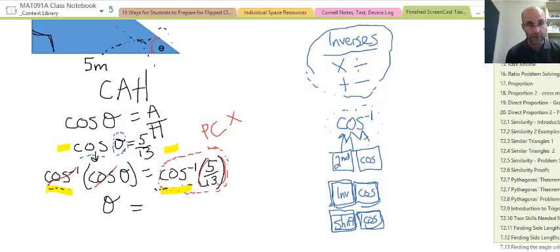Always use the brackets, otherwise you might get the answer wrong. So you go inverse cos 5 on 13. If you enter that into your calculator to one decimal place - that's usually enough for angles because one degree is small - you get 67.4 degrees.